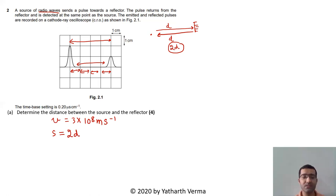What is the time taken? Time taken is 4 × 0.2 microseconds because 4 centimeters and each centimeter represents 0.2 microseconds. So that gives 0.8 microseconds, which is also equal to 0.8 × 10^-6 seconds.